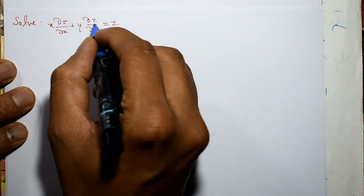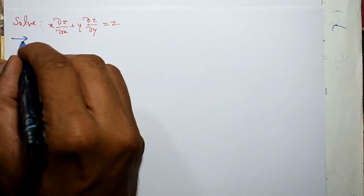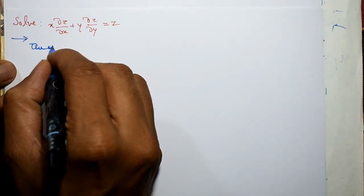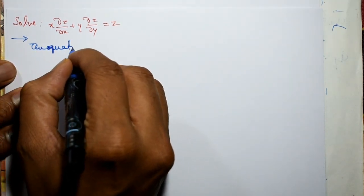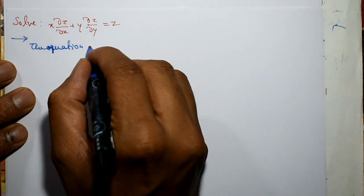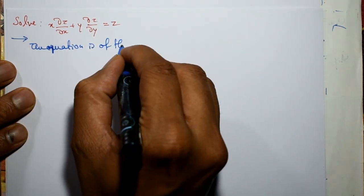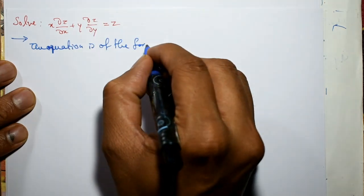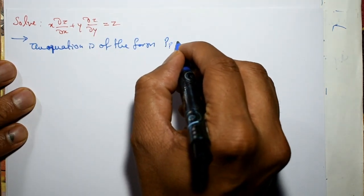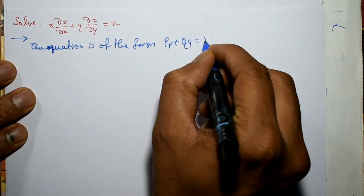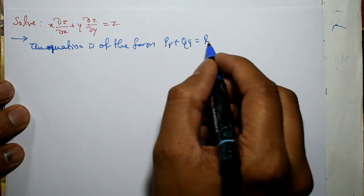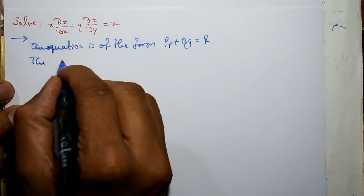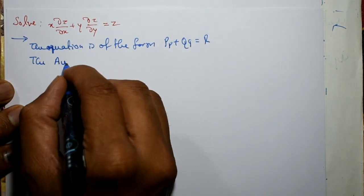Now see the given equation. Now solution part. The equation is of the form Pp + Qq = R. Then after you take the auxiliary equation like this.